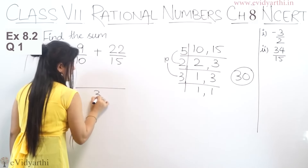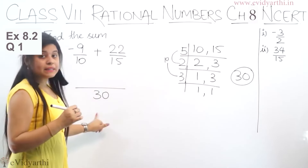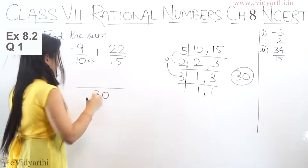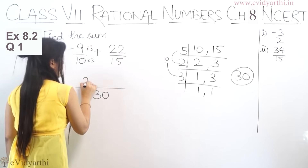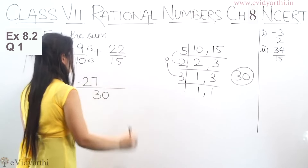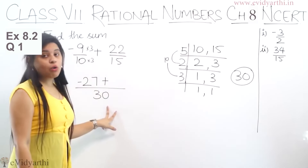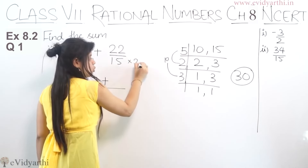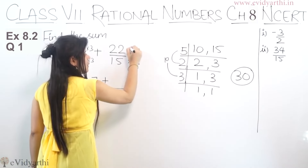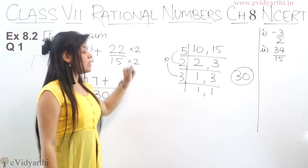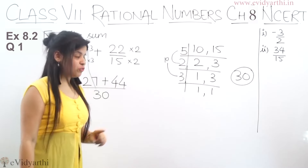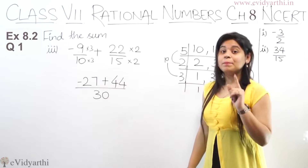We'll use the shortcut and write 30 directly as the denominator. To make 10 into 30, multiply by 3 — so numerator also multiplied by 3: 9 threes are 27, but with minus sign it becomes minus 27. To make 15 into 30, multiply by 2 — so numerator also multiplied by 2: 22 into 2 is 44. So we have minus 27 plus 44 upon 30.